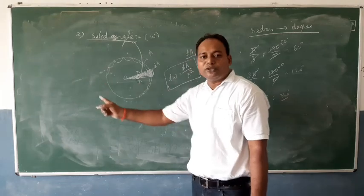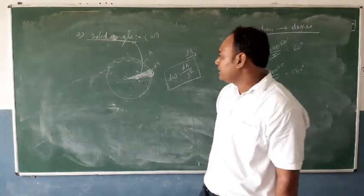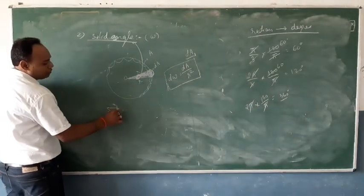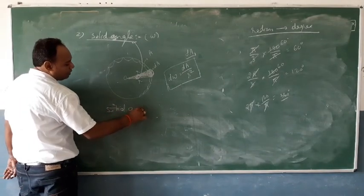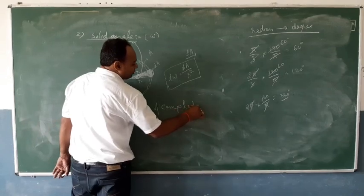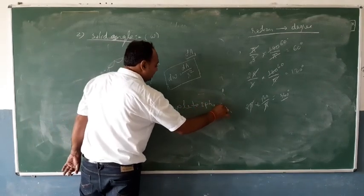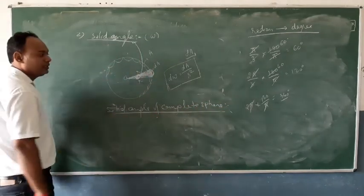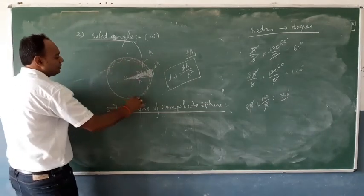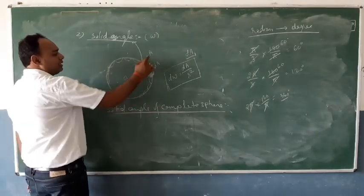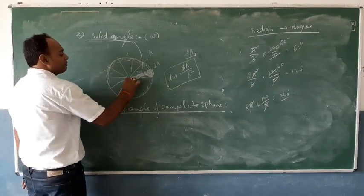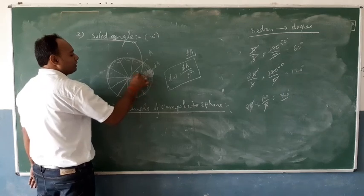In your examination, what is commonly asked is: what is the solid angle of a complete sphere? For a complete sphere, using the formula Ω = A / r² where A = 4πr² (surface area of a sphere), you substitute to get Ω = 4πr² / r² = 4π steradians.